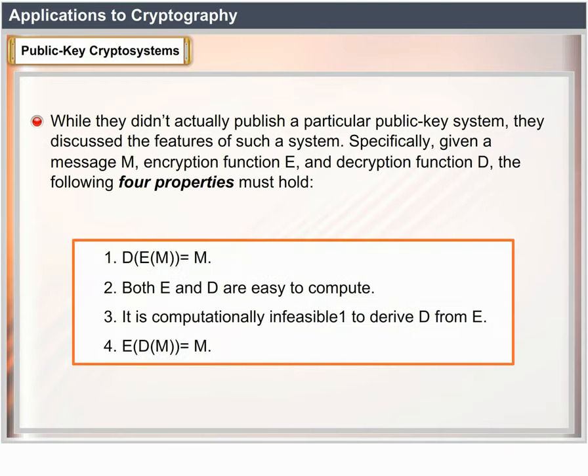Property 1: D(E(M)) = M. Property 2: both E and D are easy to compute. Property 3: it is computationally infeasible to derive D from E. Property 4: E(D(M)) = M.